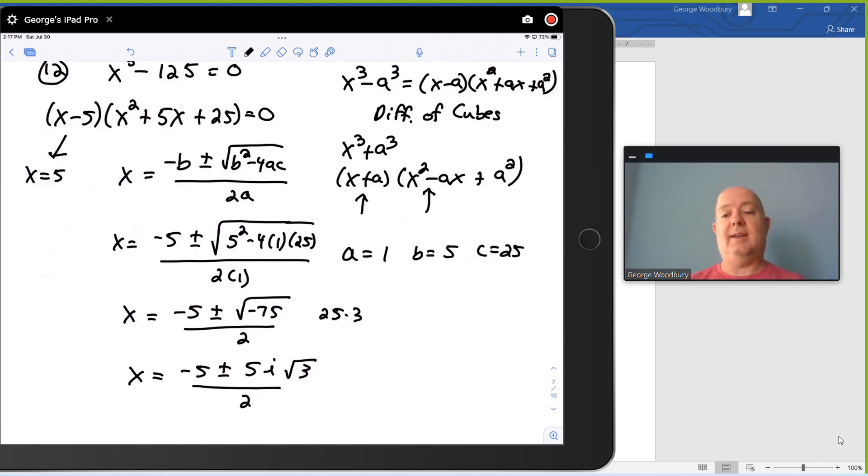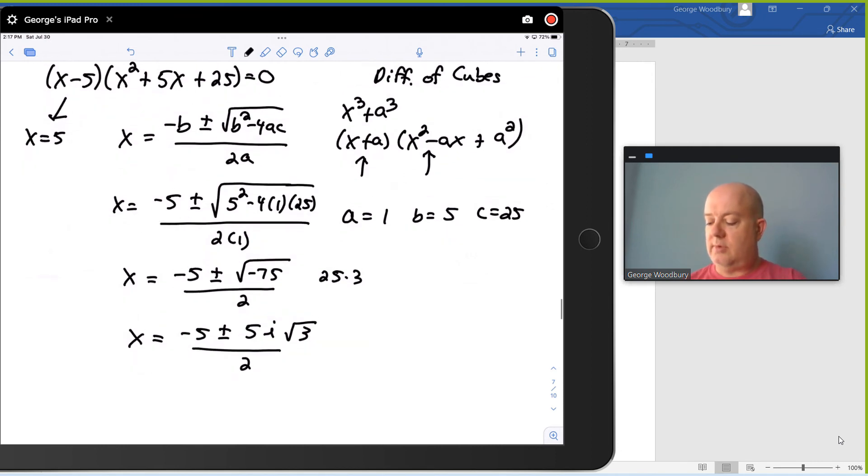So there's two solutions, and x equals 5 is the third solution. Let's write those down using a solution set. I'm going to list 5 first, negative 5 minus 5i root 3 over 2, comma, negative 5 plus 5i root 3 over 2.